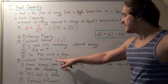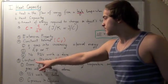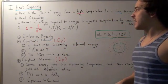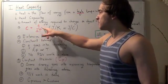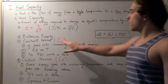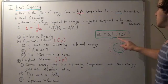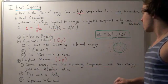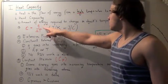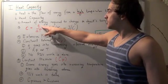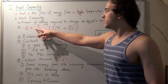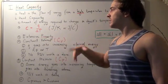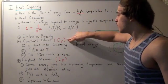That's why C-sub-p values, or the heat capacity at constant pressure, are usually larger than constant volume heat capacity values. For constant volume, the PV work term is zero, so Q equals just the change in internal energy U. For constant pressure, we have the additional PV work term, so Q is greater. A larger Q over the same change in temperature gives a larger C value — so C-sub-p is larger than C-sub-v.